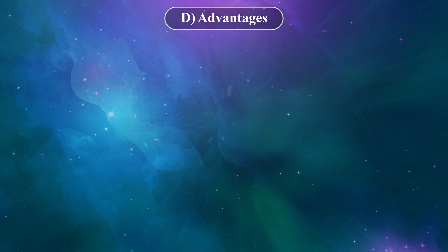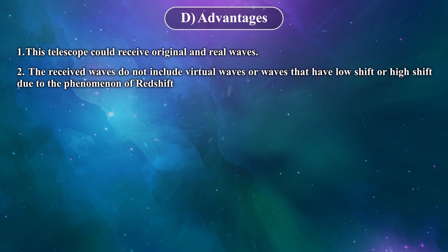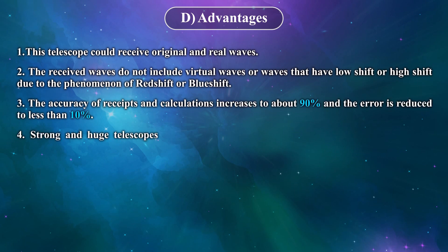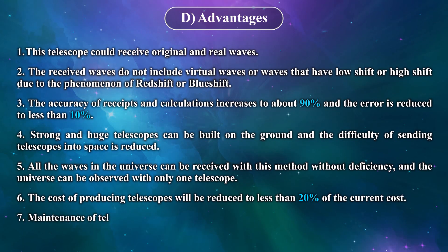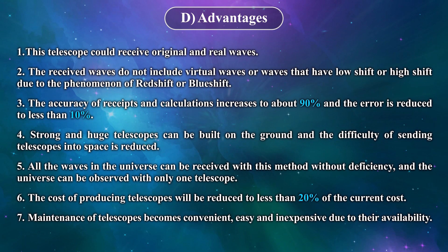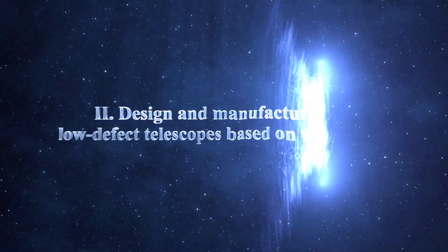Advantages: 1. This telescope could receive original and real waves. 2. The received waves do not include virtual waves or waves that have low shift or high shift due to the phenomenon of redshift or blueshift. 3. The accuracy of receipts and calculations increases to about 90% and the error is reduced to less than 10%. 4. Strong and huge telescopes can be built on the ground and the difficulty of sending telescopes into space is reduced. 5. All the waves in the universe can be received with this method without deficiency and the universe can be observed with only one telescope. 6. The cost of producing telescopes will be reduced to less than 20% of the current cost. 7. Maintenance of telescopes becomes convenient, easy, and inexpensive due to their availability.